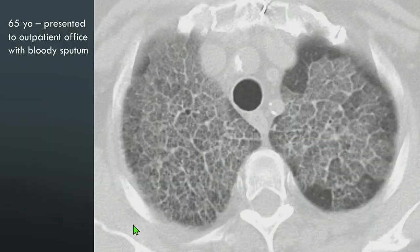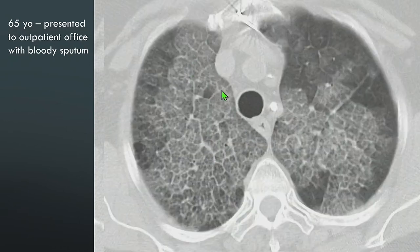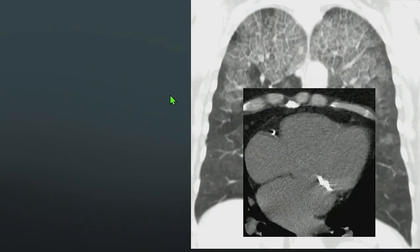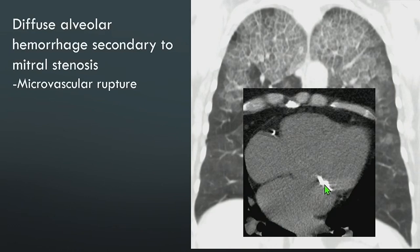One of my favorite cases of crazy paving: a 65-year-old presenting with bloody sputum. This is a fantastic example — bilateral ground glass with smooth interlobular septal thickening outlining secondary pulmonary lobules, predominantly upper lung involvement but throughout both lungs. Coronal images show the nice crazy paving pattern clearly. On soft tissue windows, there is heavy calcification along the mitral valve. This was diffuse alveolar hemorrhage secondary to mitral stenosis — a rare complication thought to be due to microvascular rupture.